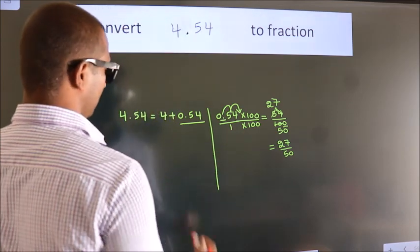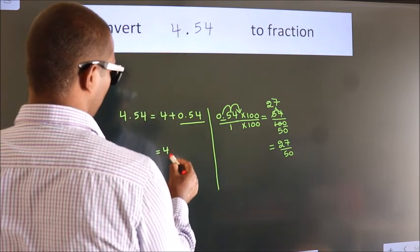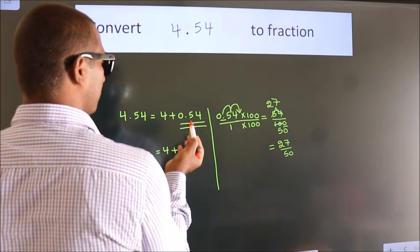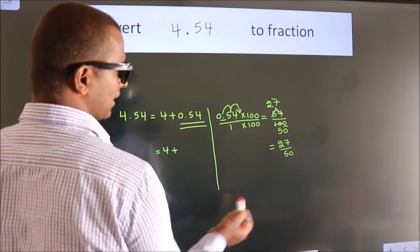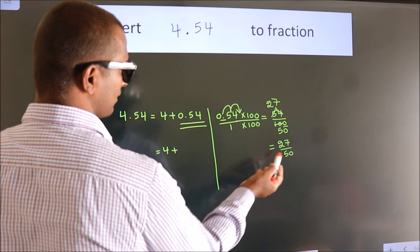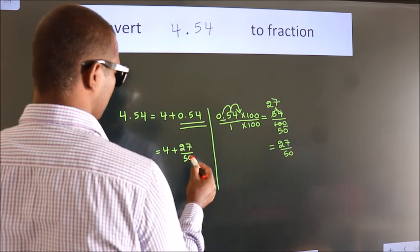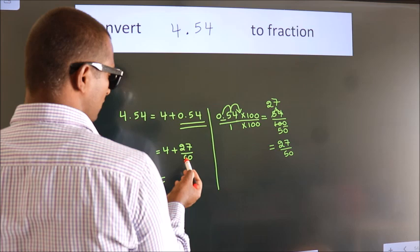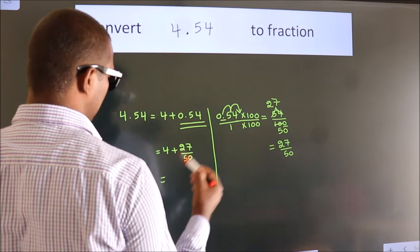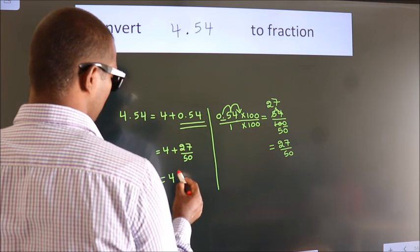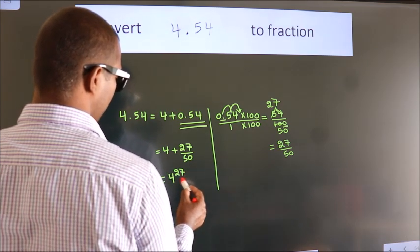Now, here. 4 plus in place of 0.54, now we write this fraction 27 by 50. 4 plus 27 by 50. In mixed fraction, it is 4 and 27 over 50.